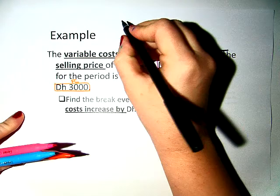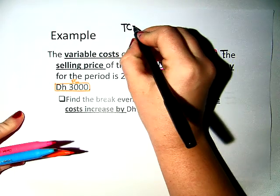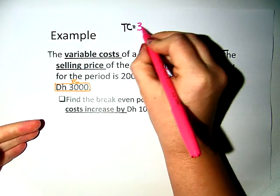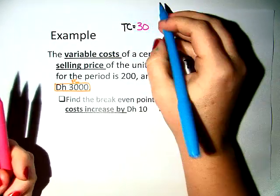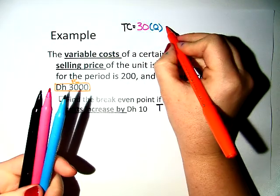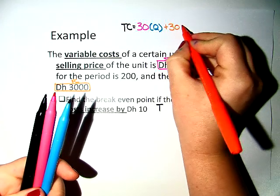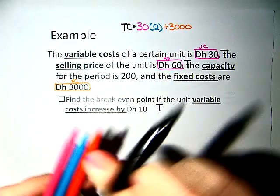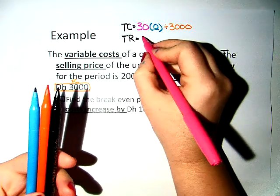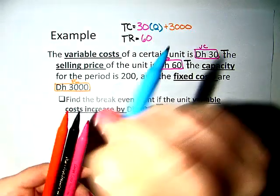So that would mean, let's start off with where we're at. The total cost right now is 30 times my quantity plus 3,000 dirhams. The total revenue is 60 times my quantity.